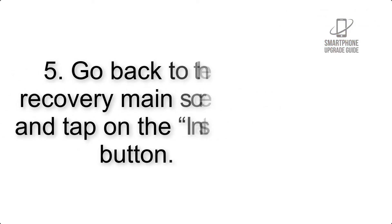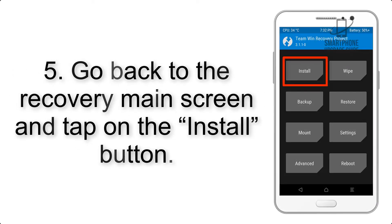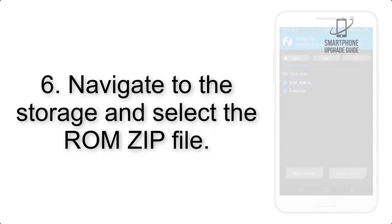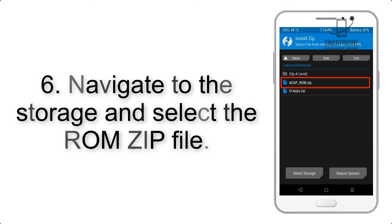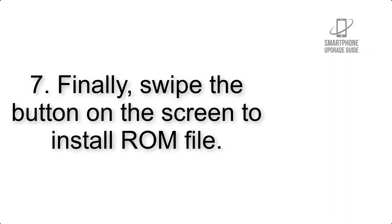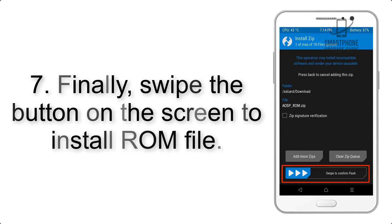Step 4: Swipe the button to wipe the device. Step 5: Go back to the recovery main screen and tap on the Install button. Step 6: Navigate to the storage and select the ROM zip file.